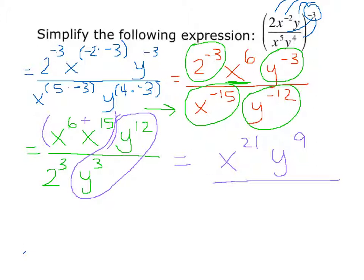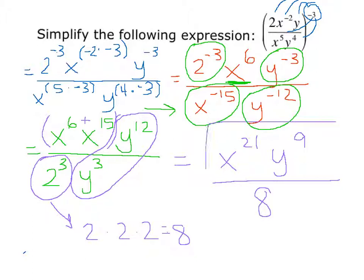Our remaining term is 2 to the 3rd power, which is 2 times 2 times 2, and that gives us 8. So we have 8 in the denominator. Our final answer is x to the 21st times y to the 9th, all over 8.